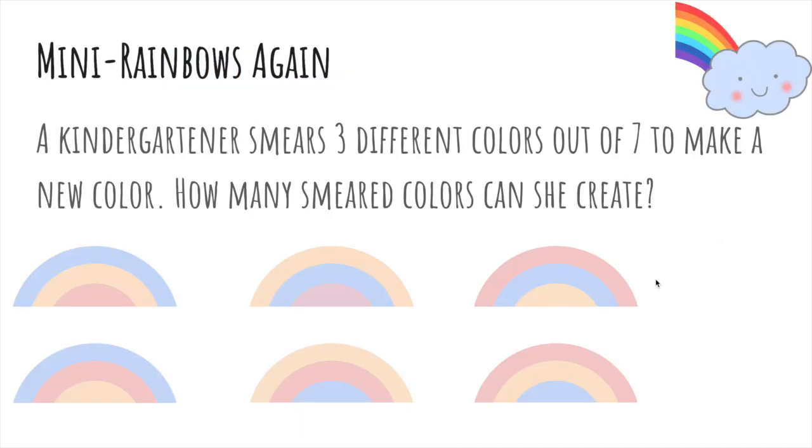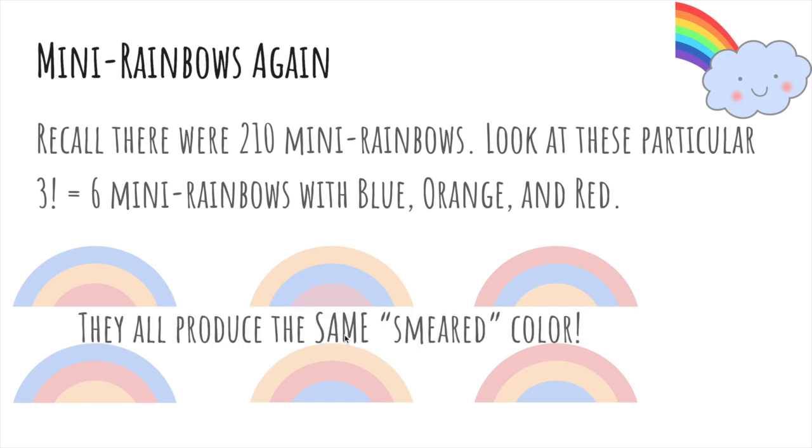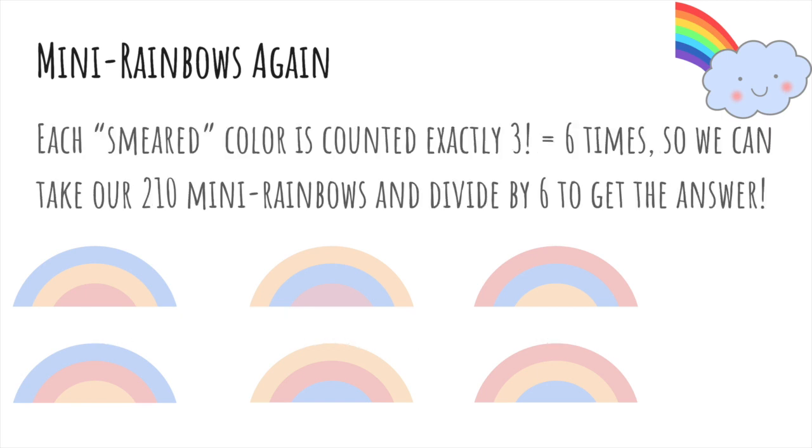So now a kindergartner smears 3 different colors out of 7 to make a new color. How many smeared colors can she create? So notice there's 3 factorial ways to order red, blue, and orange, as you see here. But these all lead to the same smeared color. So what we need to do is take our 210 and divide by 6, because each color was counted 6 times, or 3 factorial times. So the answer is 7 pic 3 over 3 factorial.